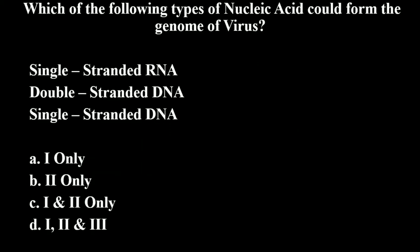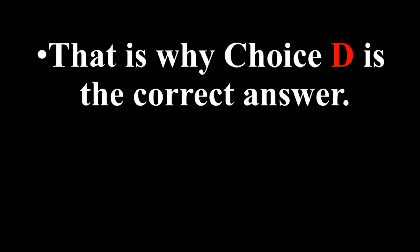Going back to our answer choices, we have options one, two, and three. The correct answer is one, two, and three — choice D — because a virus could contain a genome consisting of single-stranded DNA, double-stranded DNA, or single-stranded RNA. That is why choice D is the correct answer.